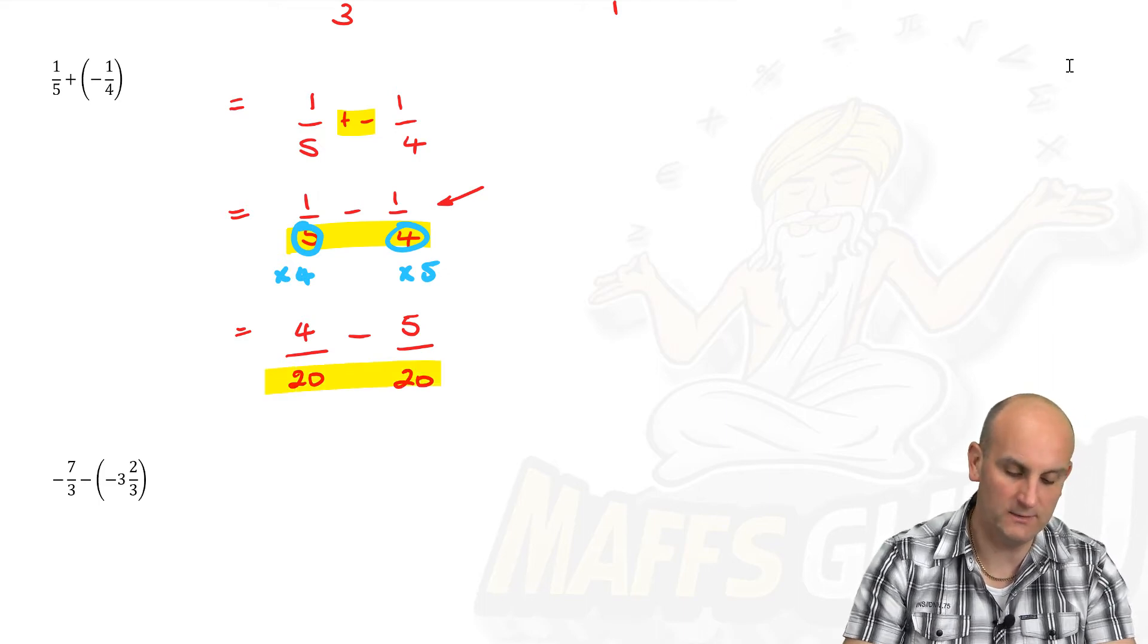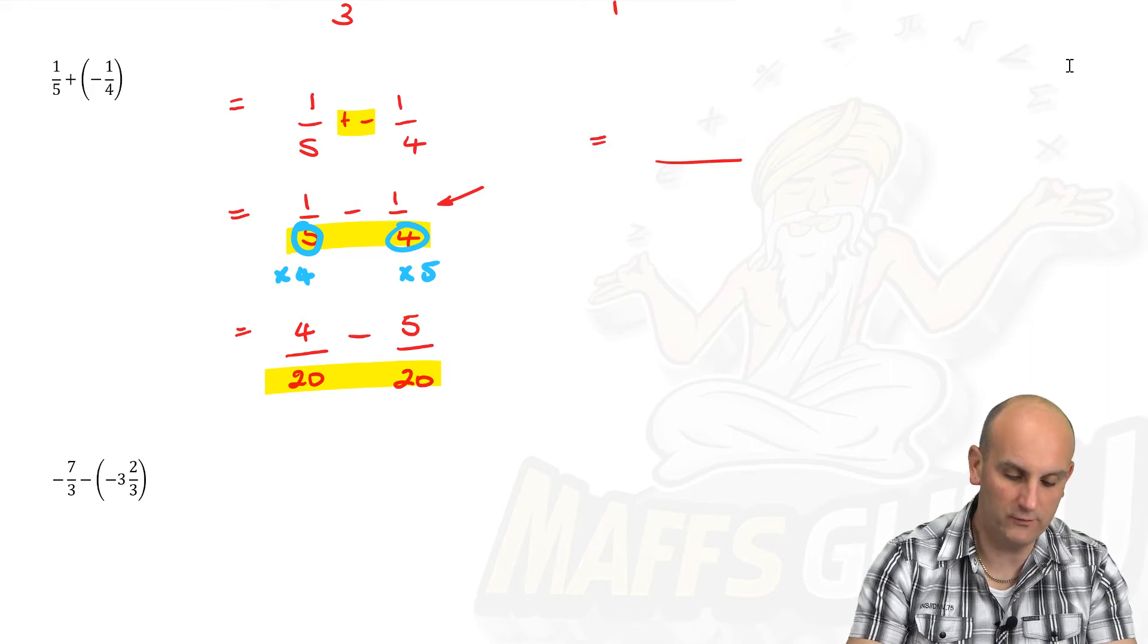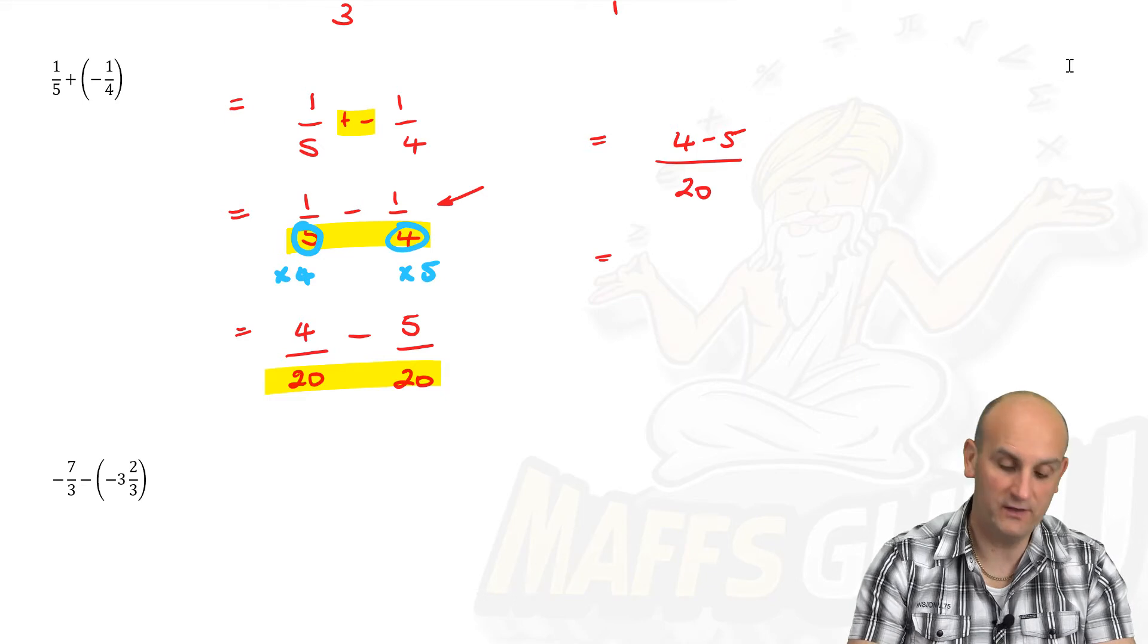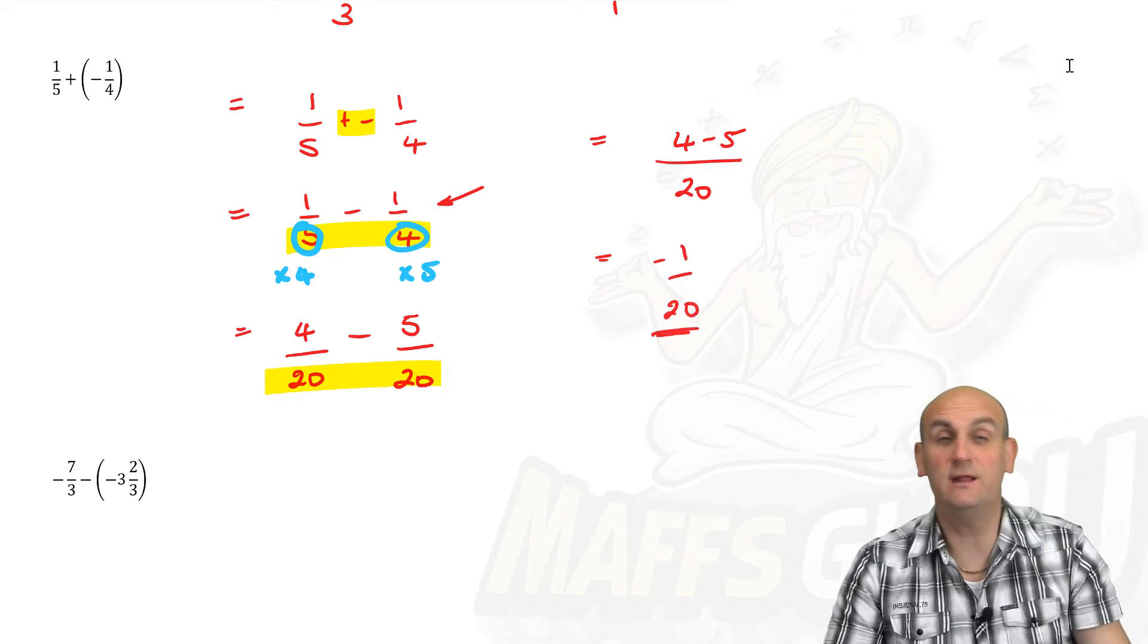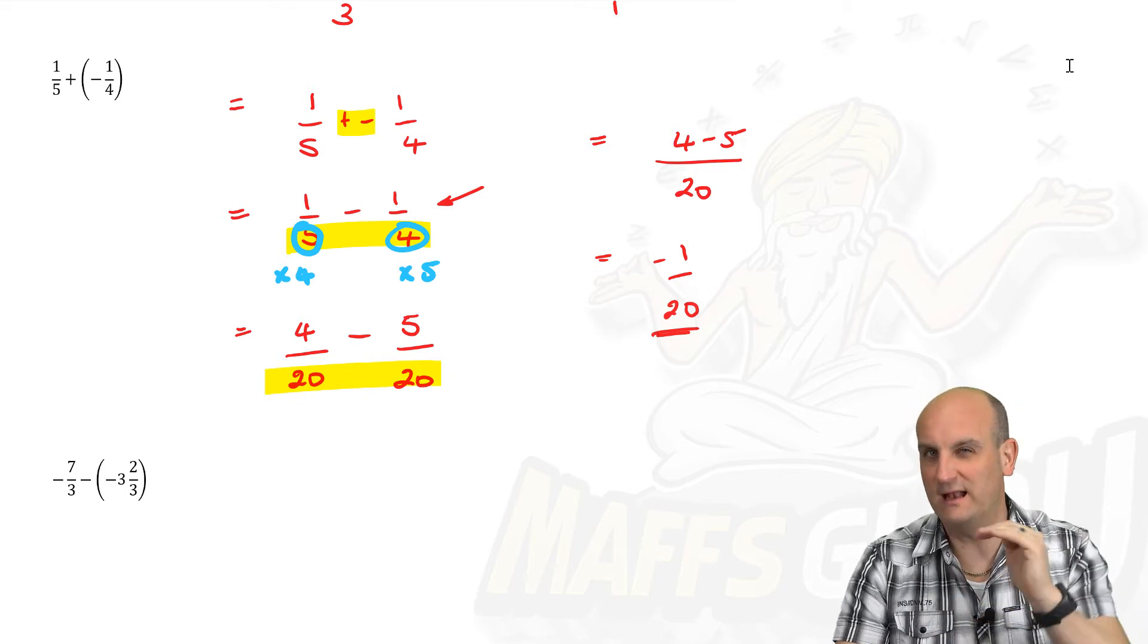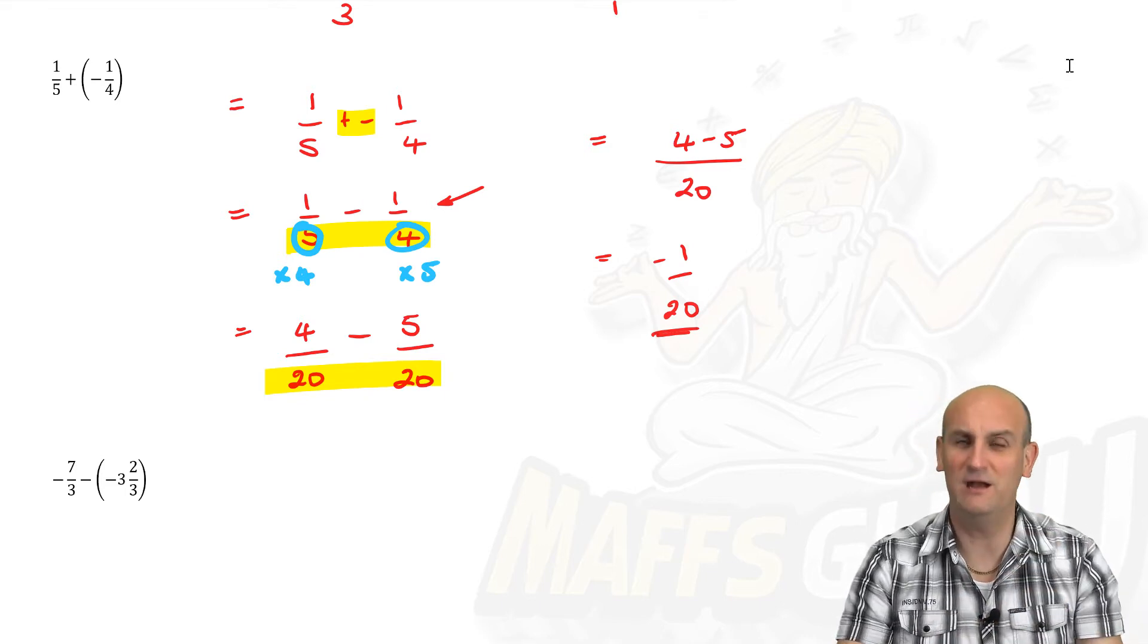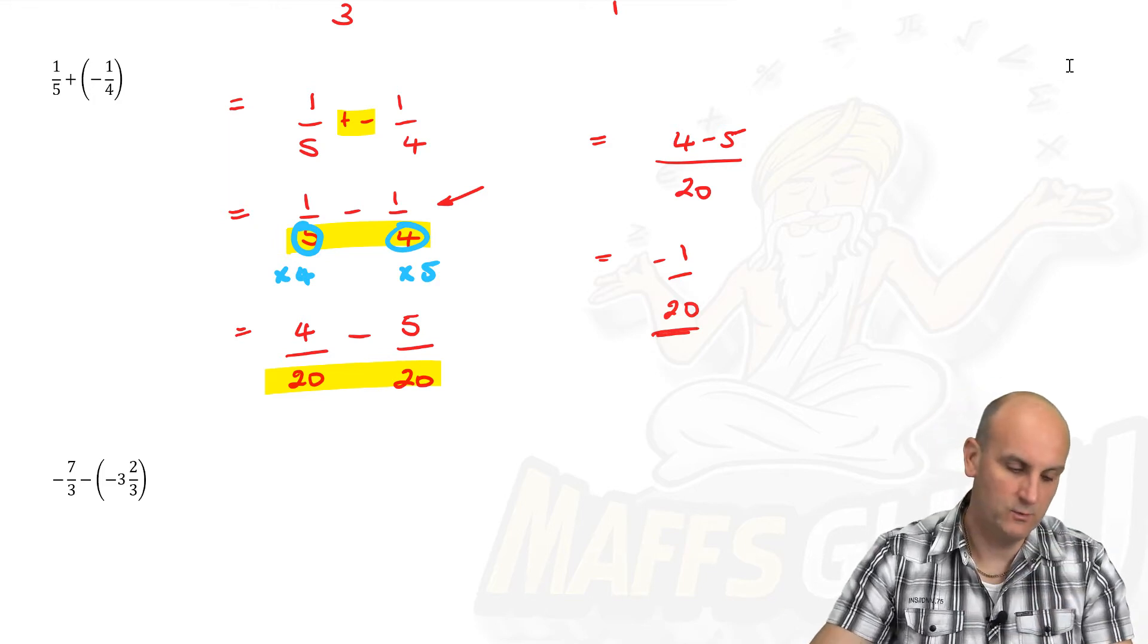Fabulous. Our denominators are the same now. And so we now say that that becomes all on 20, four minus five, and four minus five when I went to school is minus one on 20. Can it be cancelled down anymore? Nope, there's no numbers that go into that. And there we go. So we're getting a little harder each time we do this question.